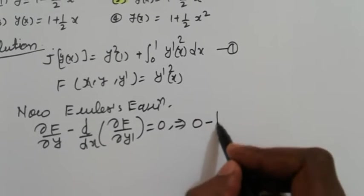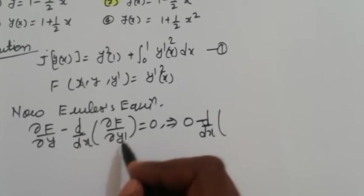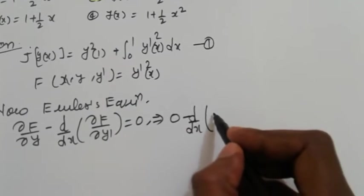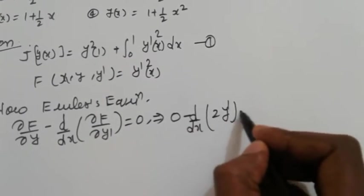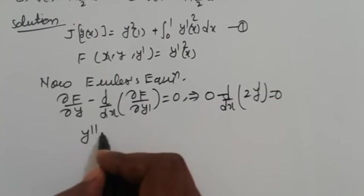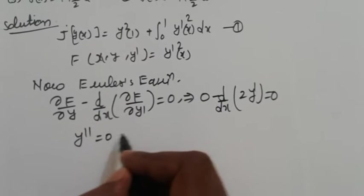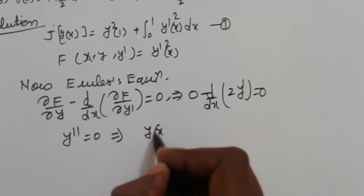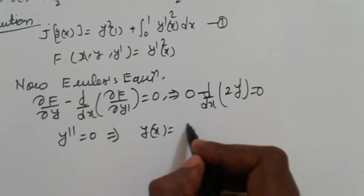And ∂F/∂y' with respect to y', so now we get here 2y' = 0. So simplify, we get here y'' = 0. Imply that again y(x) is equal to C₁x + C₂.